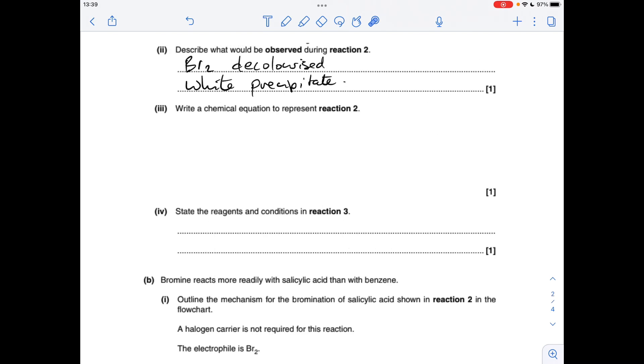What would you see in reaction two? That's a reaction of salicylic acid with bromine, so the bromine would be decolorised and you would see a white precipitate.